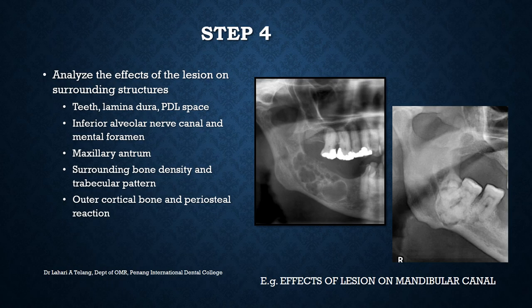Step four is to analyze the effects of the lesion on surrounding structures — the teeth, lamina dura, PDL space, the inferior alveolar canal or mental foramen, whether the lesion has invaded the maxillary sinus, surrounding bone density and trabecular pattern, whether the outer cortical bone is intact, and whether there is a periosteal reaction. For example, in the pictures shown here, the mandibular canal has been involved — the lesion has pushed or involved the mandibular canal.